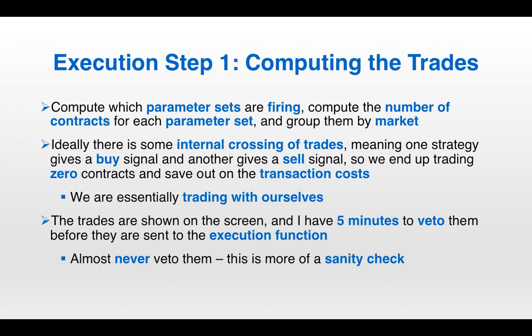Now we can begin discussing the specific execution process. Step one is computing the trades: we compute which parameter sets are firing, the number of contracts for each parameter set, and group them by market — as discussed in the last video on risk management and position sizing. Ideally, there will be some internal crossing of trades, where strategy A gives a buy signal and strategy B gives a sell signal, so we end up trading zero contracts and saving on transaction costs. This is a big benefit of trading negatively correlated strategies.